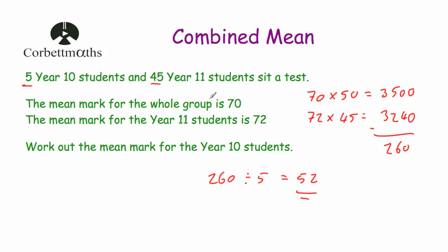So if you're given a question where you're told the mean for the whole group, you can multiply that by the total number of students, and that will give you the grand total. Then if you know the mean for one of the smaller groups, you can multiply that by the number in that group and take it away to find the total for the other group, and then work out its mean.